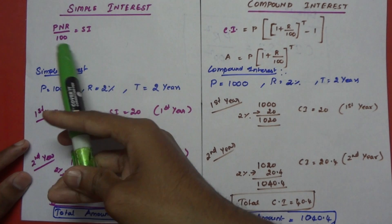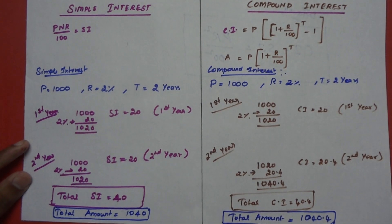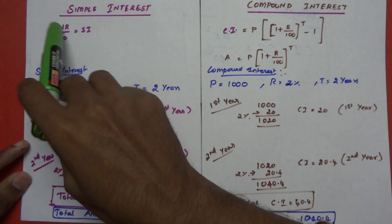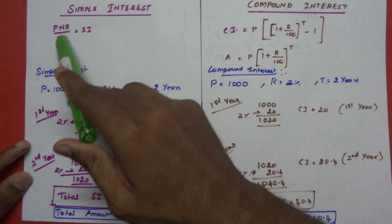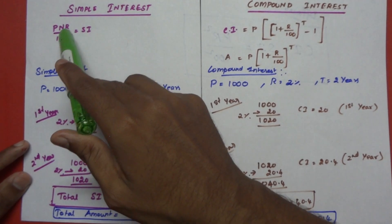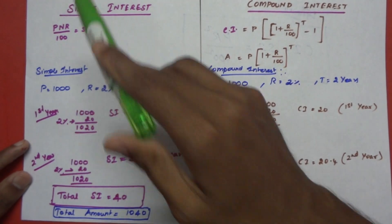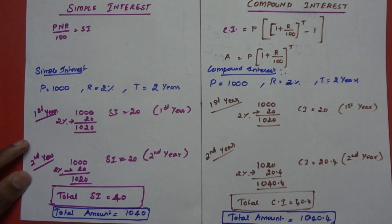Simple interest is a formula: PNR divided by 100. P stands for principal, N for time, and R is the rate of interest.